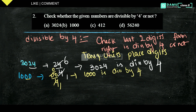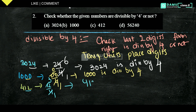Our next number is 4112. The last 2 digits are 12. Is 12 divisible by 4? Yes, 4 × 3 = 12. So 4112 is divisible by 4.